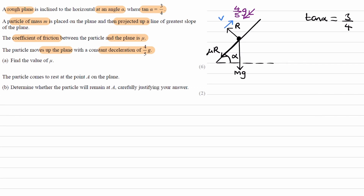Now let's resolve the weight force parallel and perpendicular to the slope. The direction perpendicular to the slope gives us a component of mg cos alpha, as it's the adjacent to angle alpha, and the direction parallel to the slope gives mg sin alpha, as it's the opposite side.